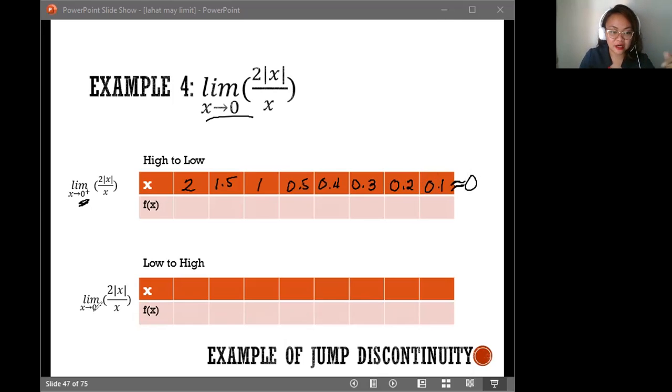On the other table now, as x approaches 0 but from the left side. So that means these are numbers lower than 0, and numbers lower than 0 will be negative numbers. Very good. So we have negative 2, we are approaching 0, negative 2, negative 1.5, negative 1, and negative 0.5.